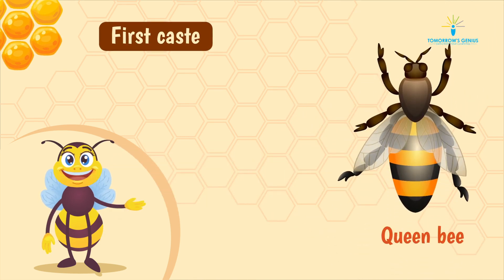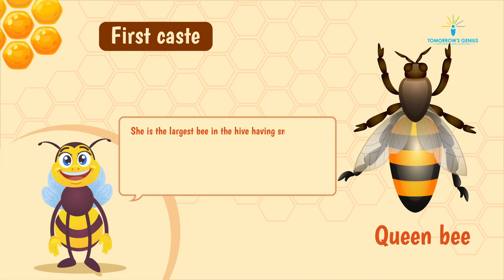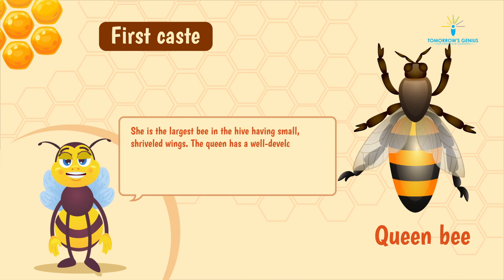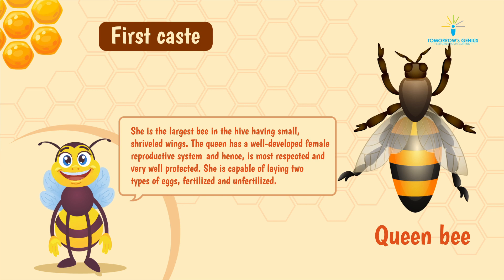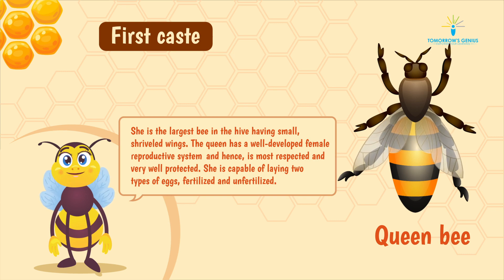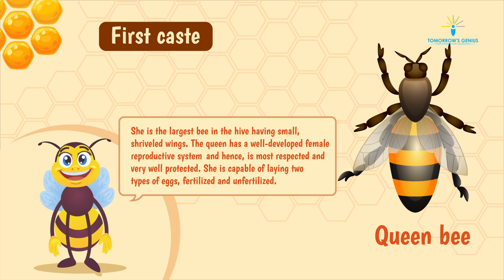First caste: the queen bee. She is the largest bee in the hive, having small shriveled wings. The queen has a well-developed female reproductive system and hence is most respected and very well protected.